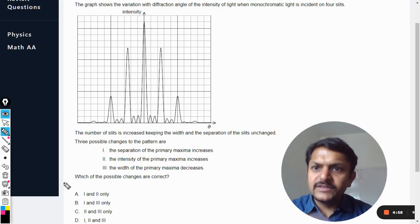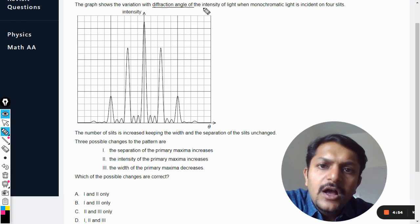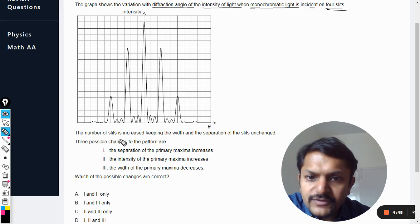Okay dear students, let us see what is there in this question. The graph shows the variation with the diffraction angle of the intensity of light when monochromatic light is incident on four slits.